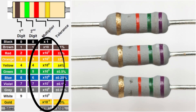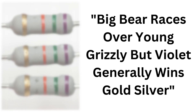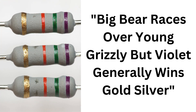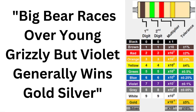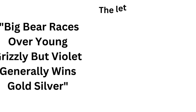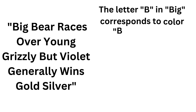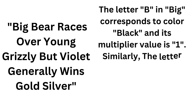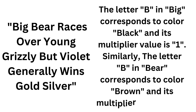The third band is the multiplier. It tells us how many zeros to add to the first two digits. The mnemonic 'Big bear race over young grizzly, but violet generally wins gold, silver' helps remember the multiplier colors. For example, the letter B in 'big' corresponds to black with a multiplier value of 1, and the letter B in 'bear' corresponds to brown with a multiplier value of 10.